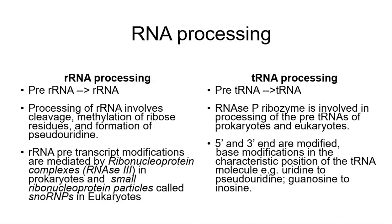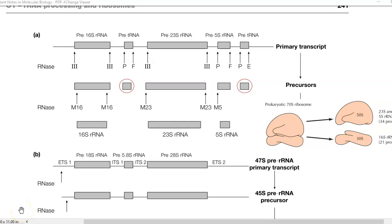Regarding tRNA processing, the 5' as well as the 3' end of the tRNA molecules are modified, and base modification at certain characteristic positions of the tRNA molecule is also effected. For example, uridine can be modified into pseudouridine, and a guanosine base can be modified into inosine in a tRNA molecule. These are characteristic processing events that take place both in rRNA and tRNA molecules. This image shows how rRNA as well as tRNA are processed in a prokaryotic organism from a primary transcript.